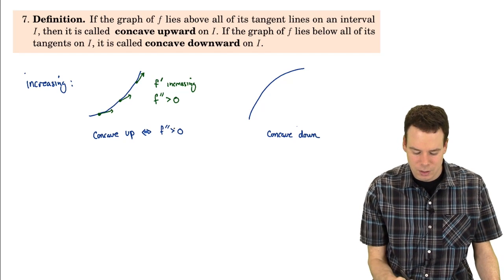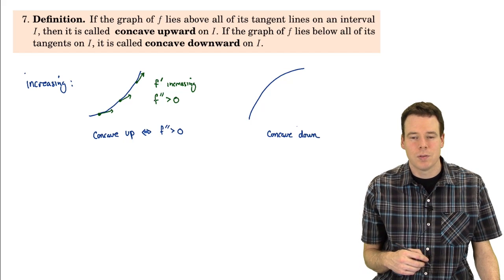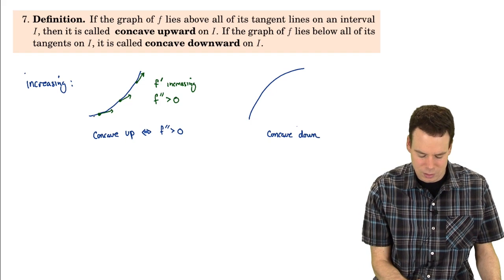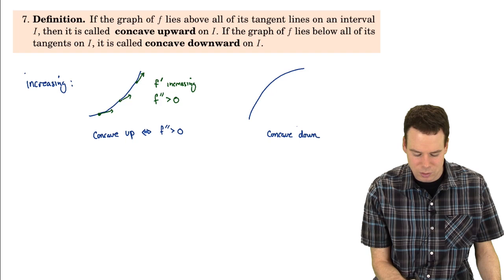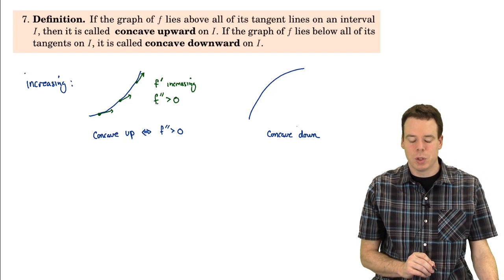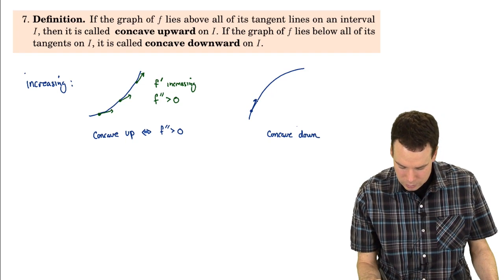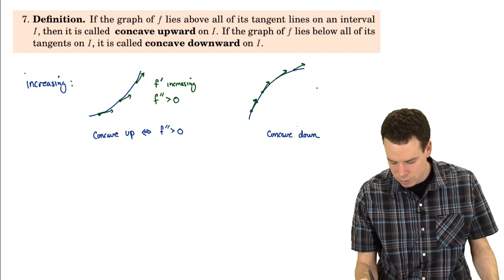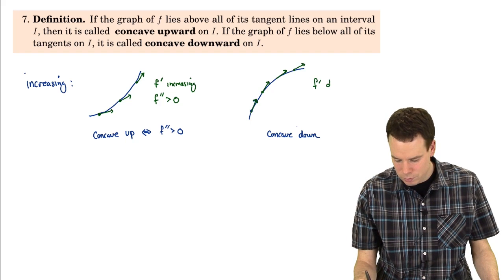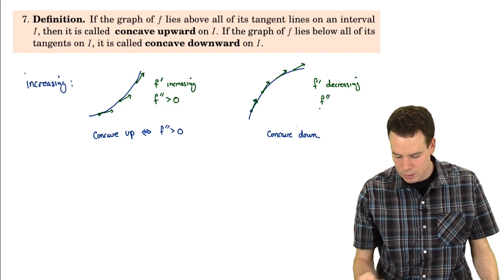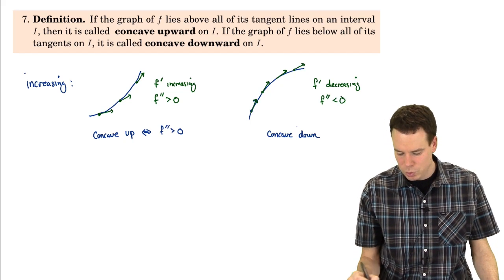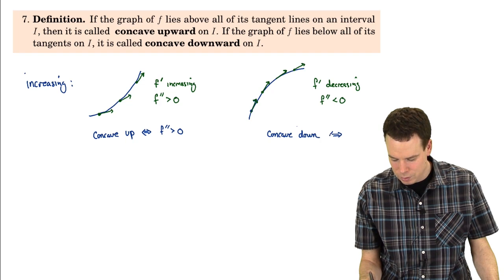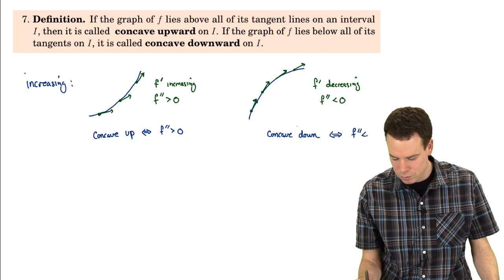So that means concave up is precisely happening when the second derivative is positive. There's our connection: the second derivative is the rate of change of the first derivative, or the rate of change of the slopes of the tangent lines. Those tangent lines are getting steeper so the second derivative is positive. What about concave down? In those cases, the slopes of the tangent lines are decreasing — f prime is decreasing — meaning f double prime is negative. So it's concave down precisely when the second derivative is negative.